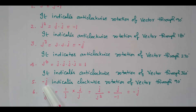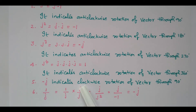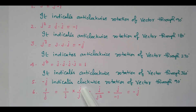Then, how will you find the value of 1 divided by J? We cannot directly find 1 divided by J. So in order to convert to a convenient form, we multiply and divide by J, so that the original value will not change. So 1 divided by J, multiplied by J divided by J. That gives J in the numerator.